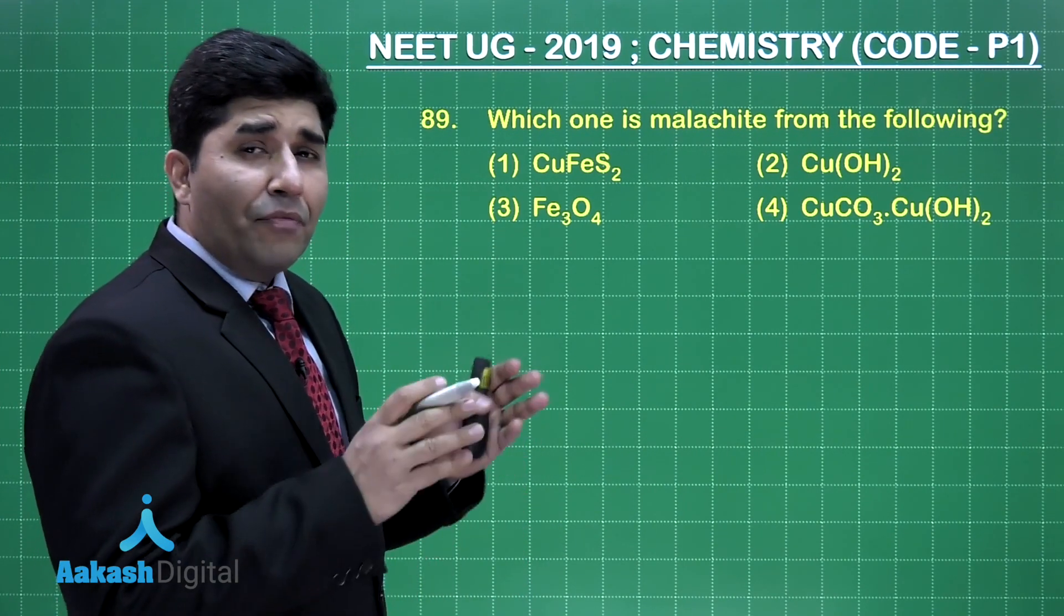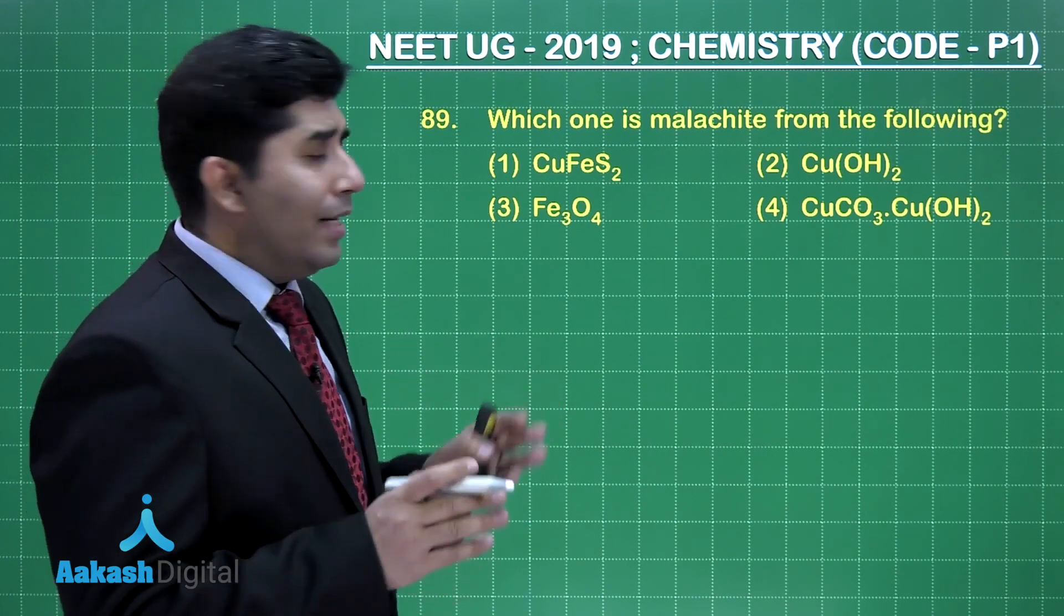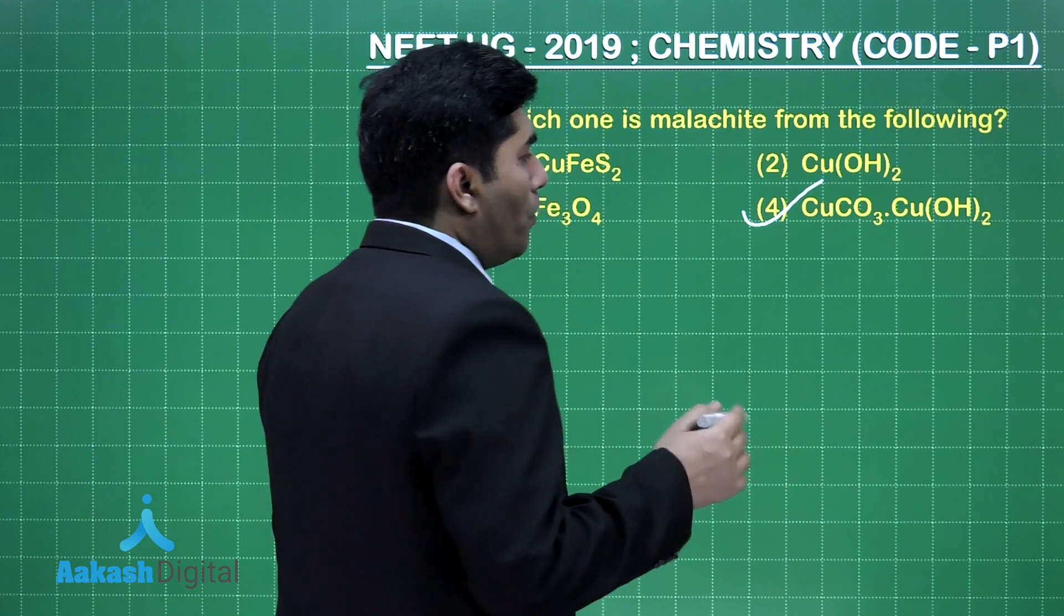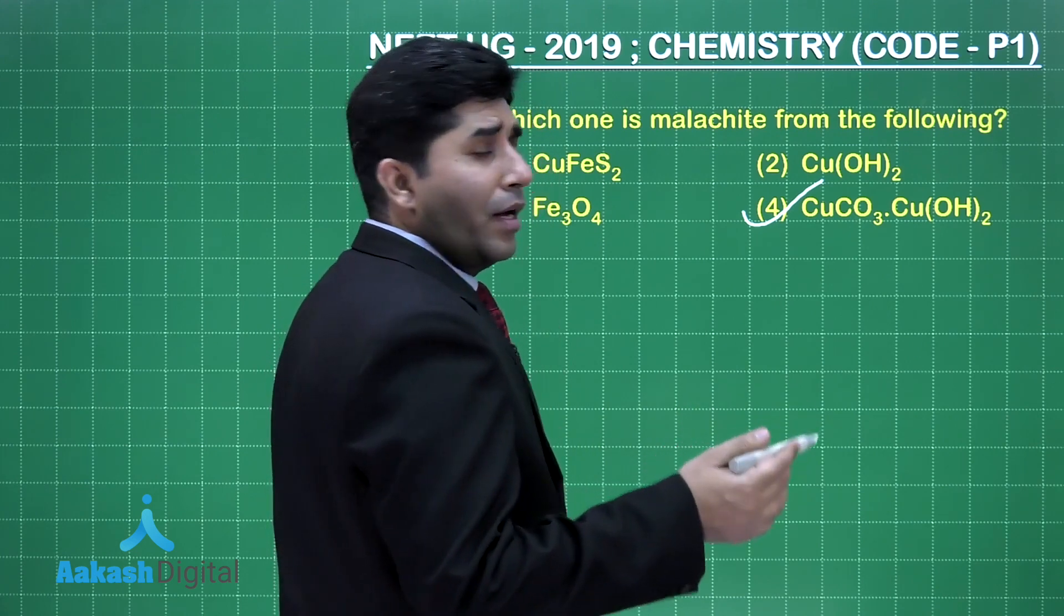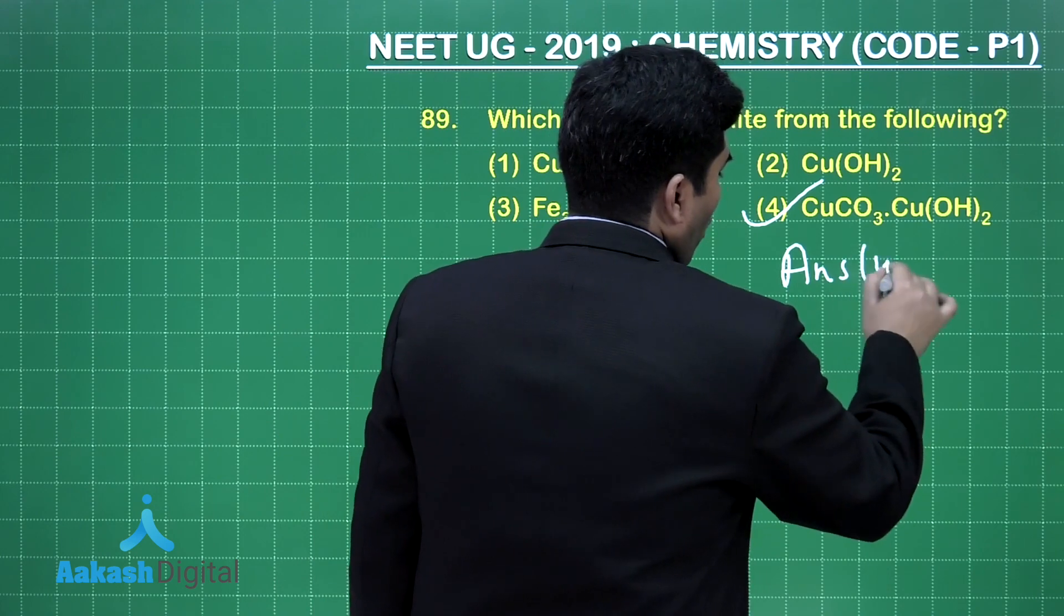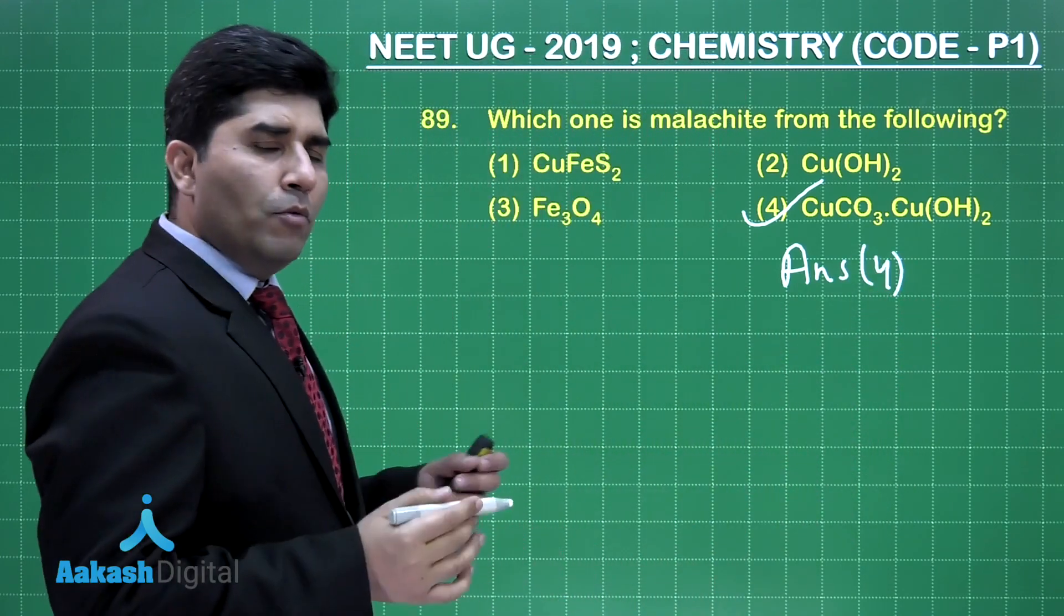Now, we have to know the formula of the malachite and the formula of the malachite is this fourth one, copper carbonate dot copper hydroxide. So, our answer is option number 4. Let us move on to the next question.